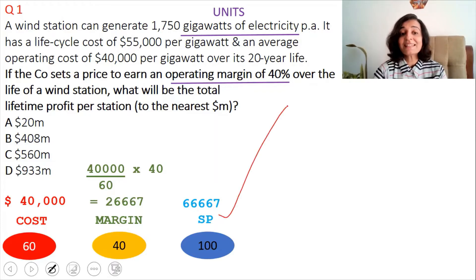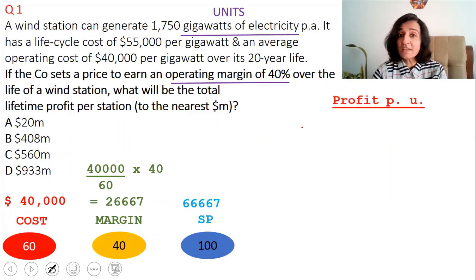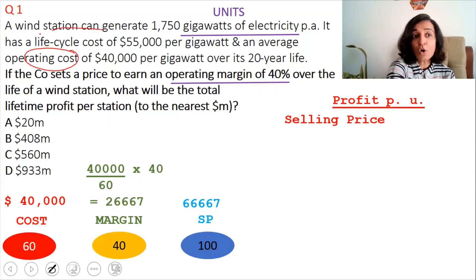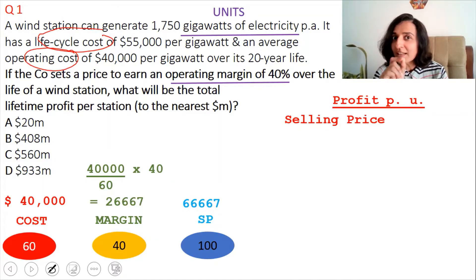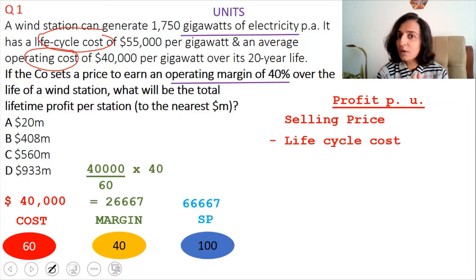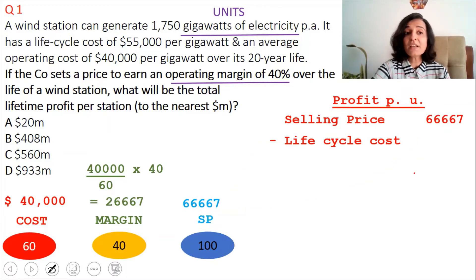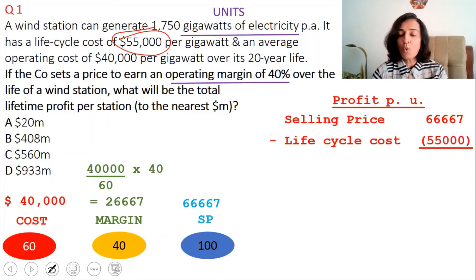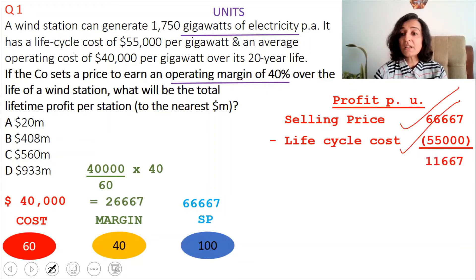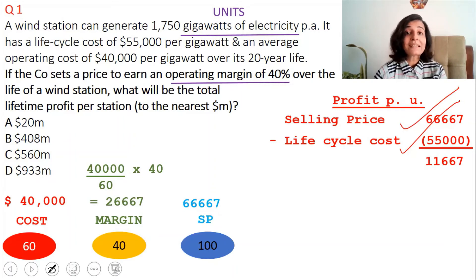Now we have the selling price as $66,667. To calculate profit per unit, it is selling price minus life cycle cost — not the operating cost — because this is life cycle costing. The life cycle cost is $55,000. So profit per unit = 66,667 minus 55,000 = $11,667. Per unit we are making a profit of $11,667.